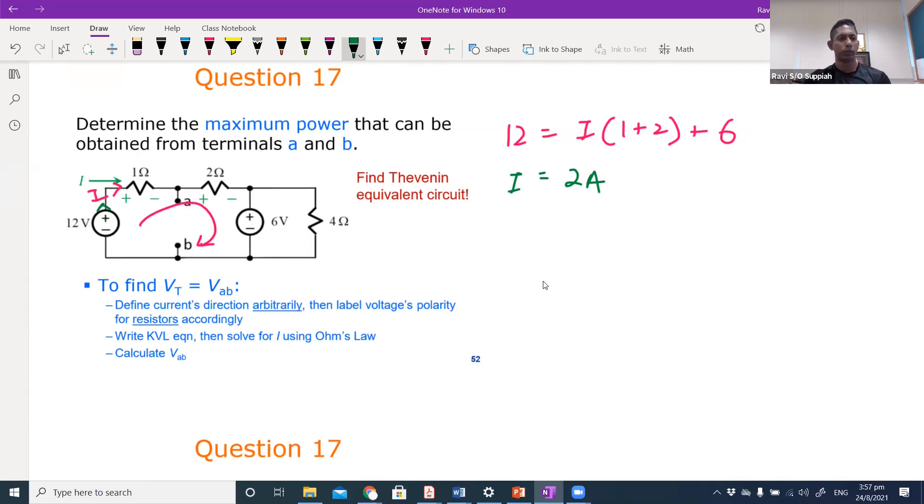So once you get this, you can calculate Vab. How do you calculate Vab? If you redraw the circuit a bit differently: 12 volts, 1 ohm, 2 ohm, 6 volts. So where is a and b? This is b and this is a. And we know that the current coming out is 2 amperes.